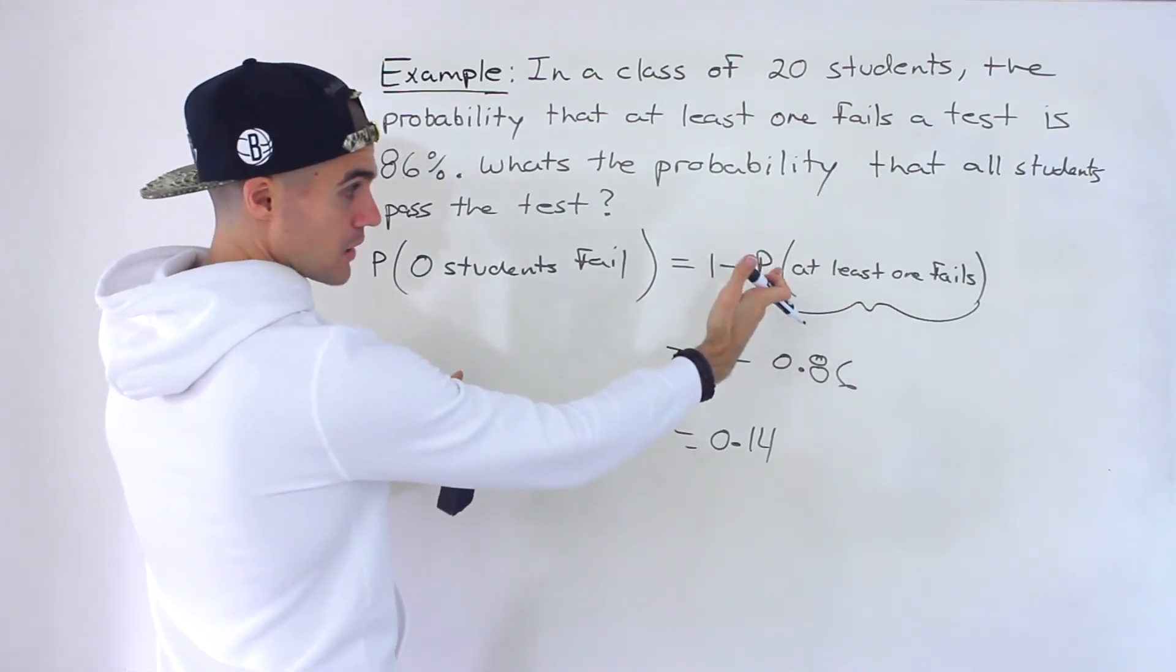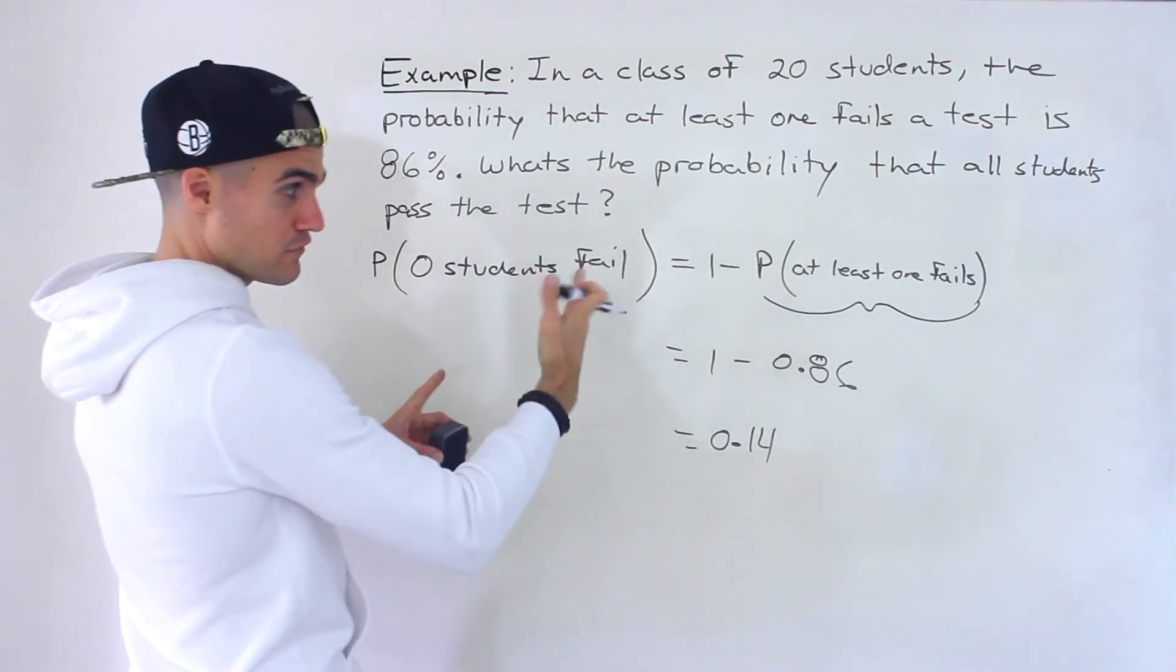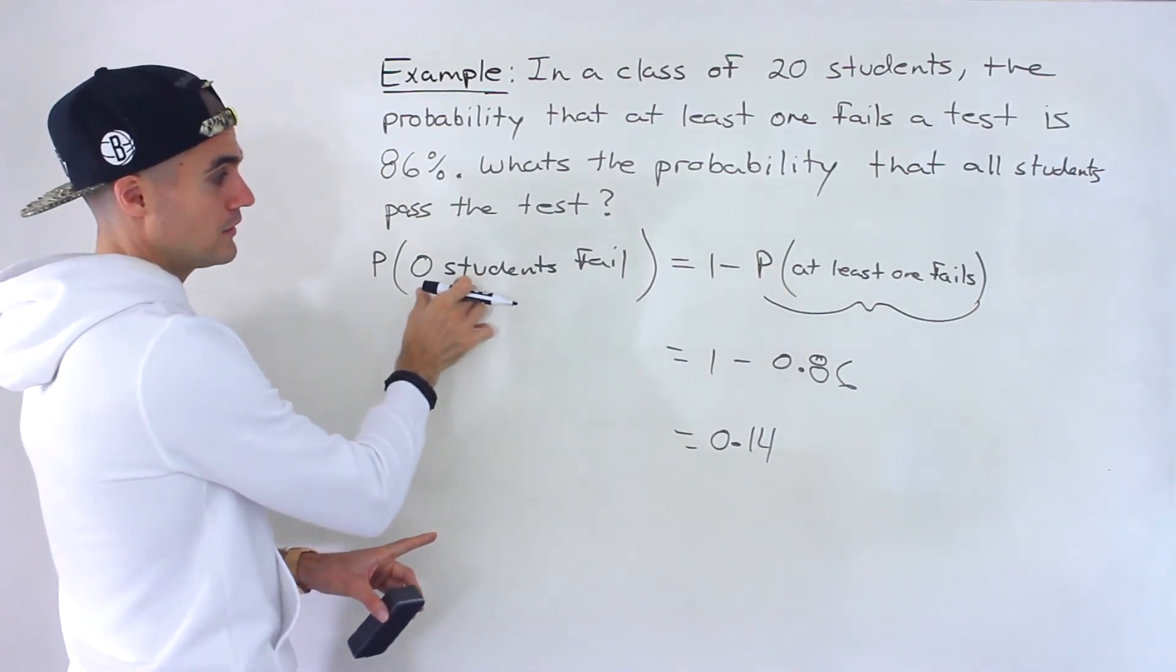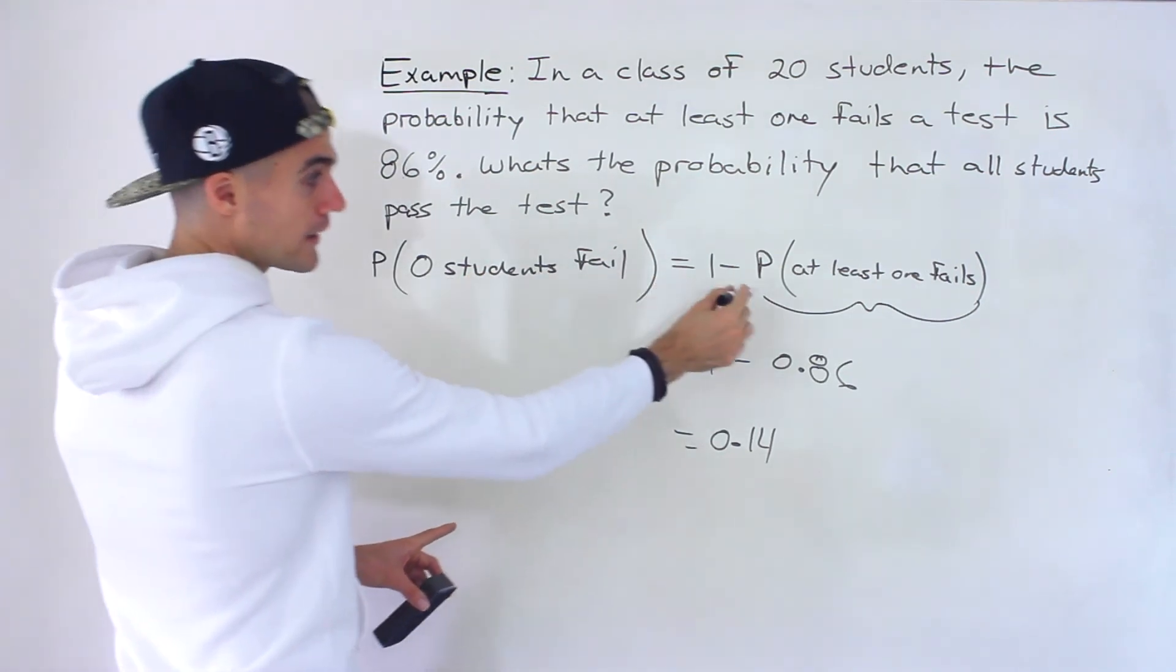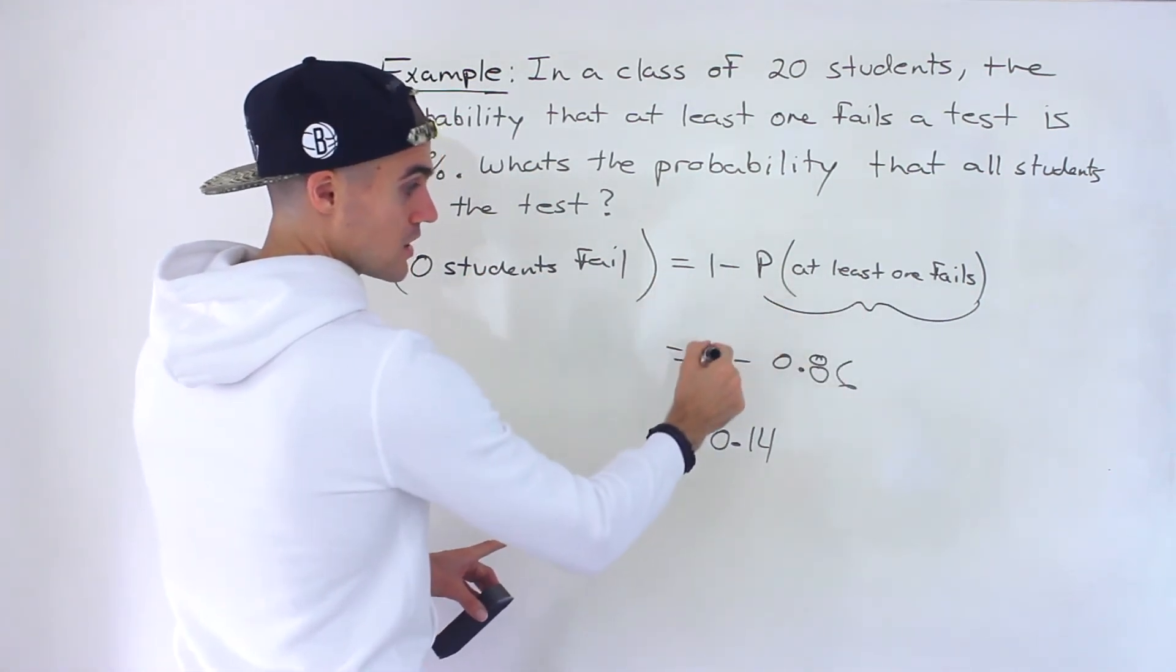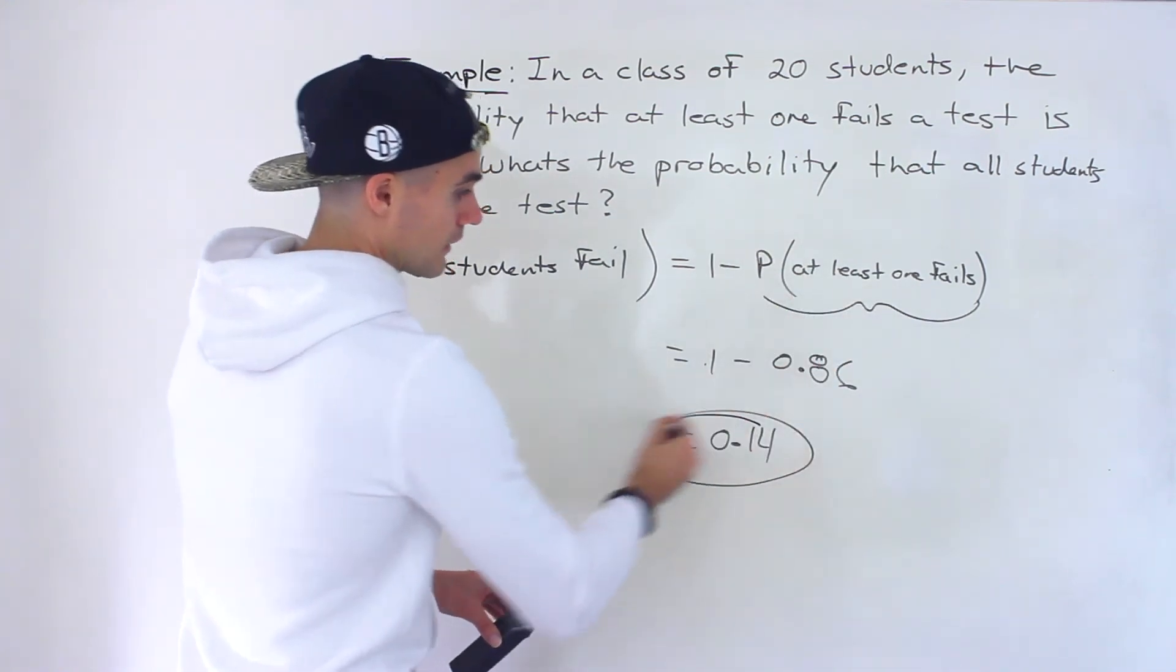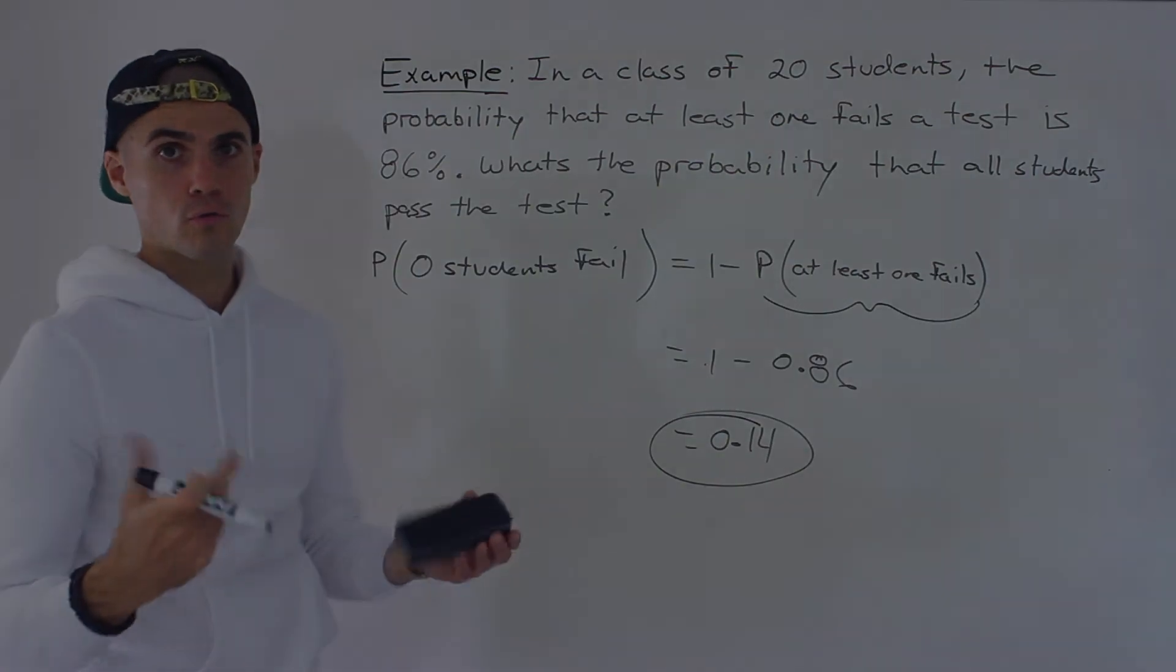Well, the other side would be less than one failing, which would be zero failing. So the probability that zero students fail is equal to one minus the probability that at least one fails, one minus 0.86, that probability we were given. So the final answer is 0.14 or 14%.